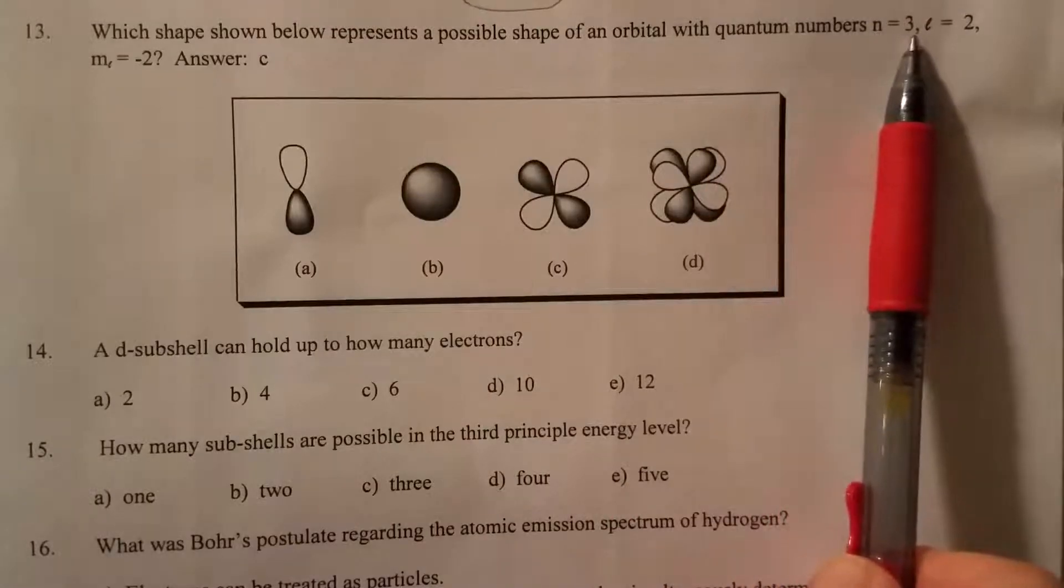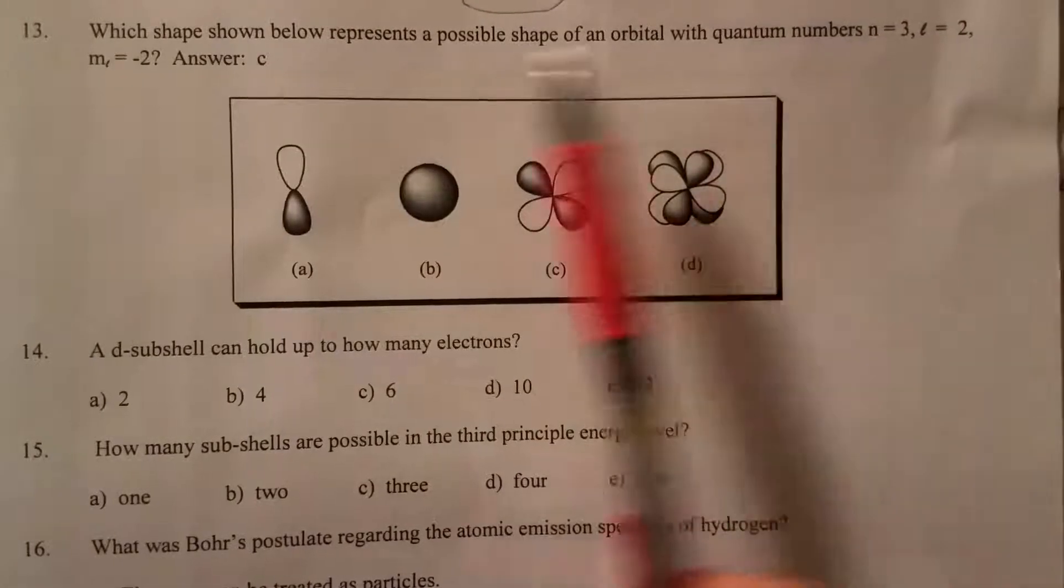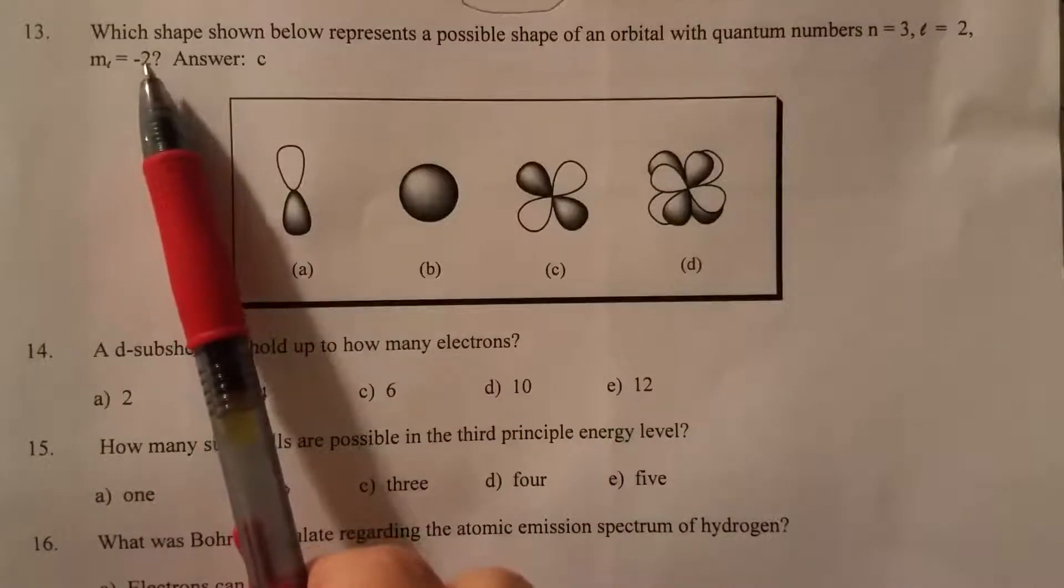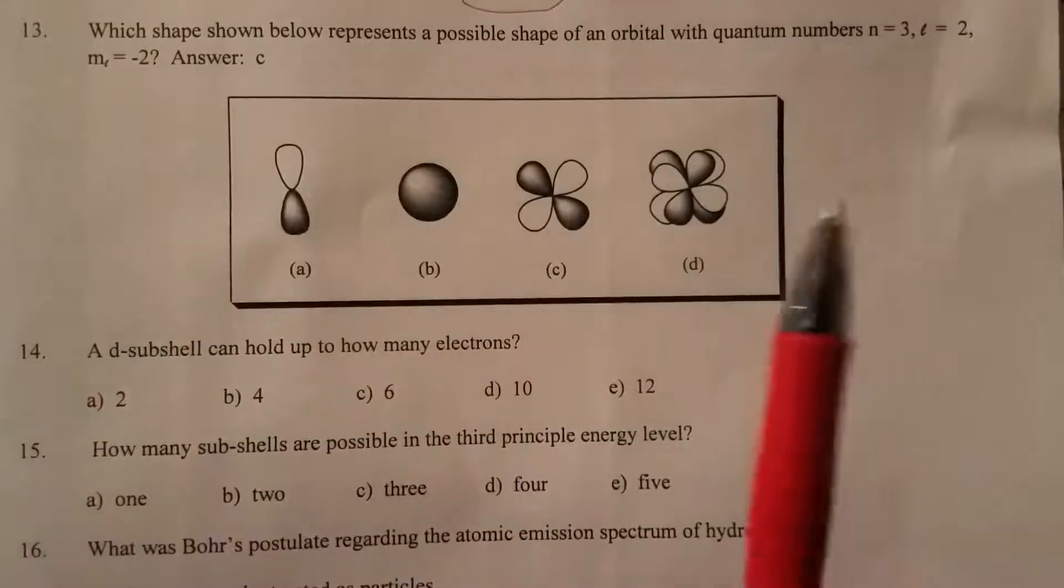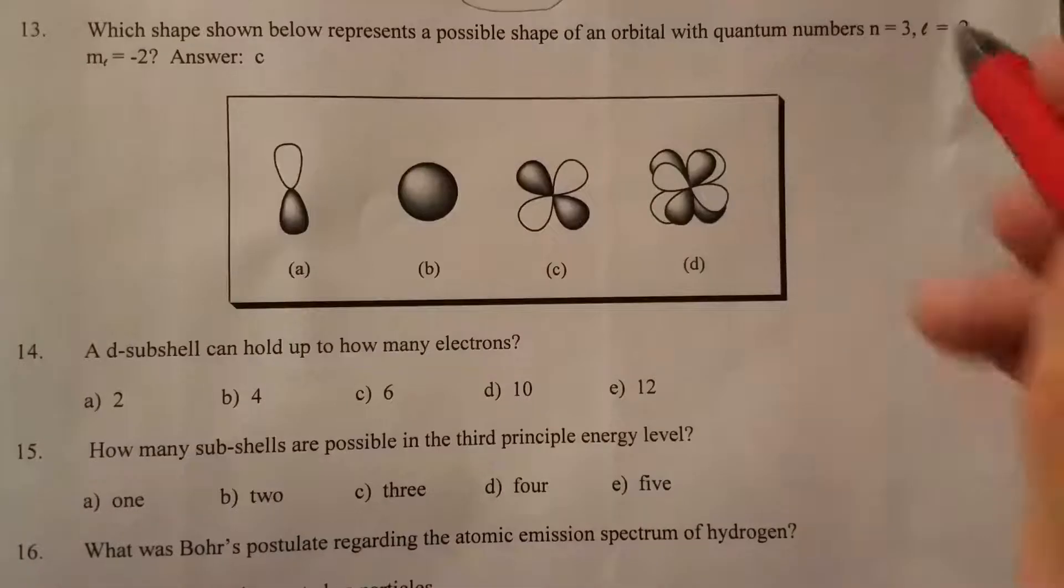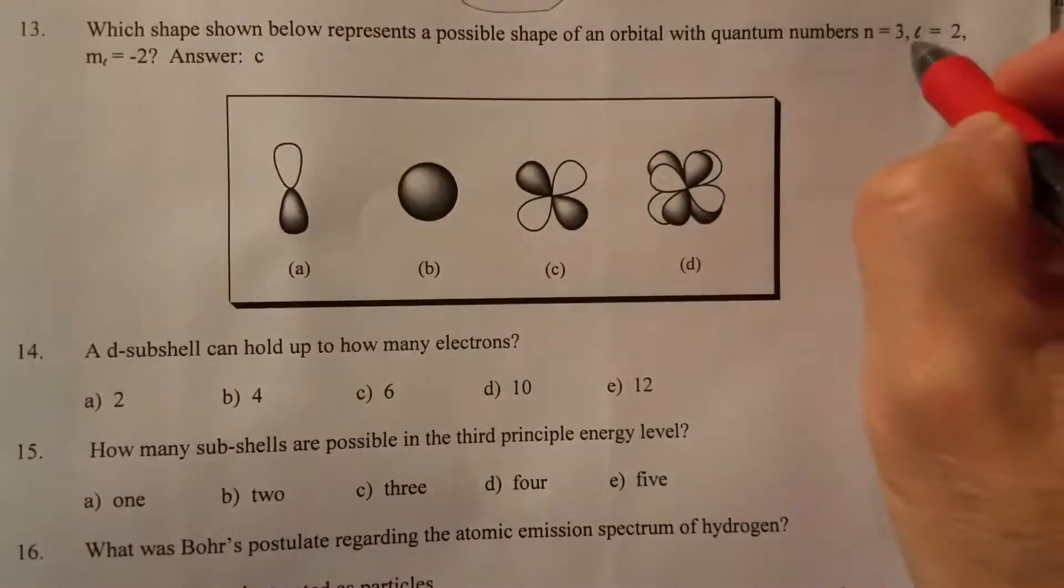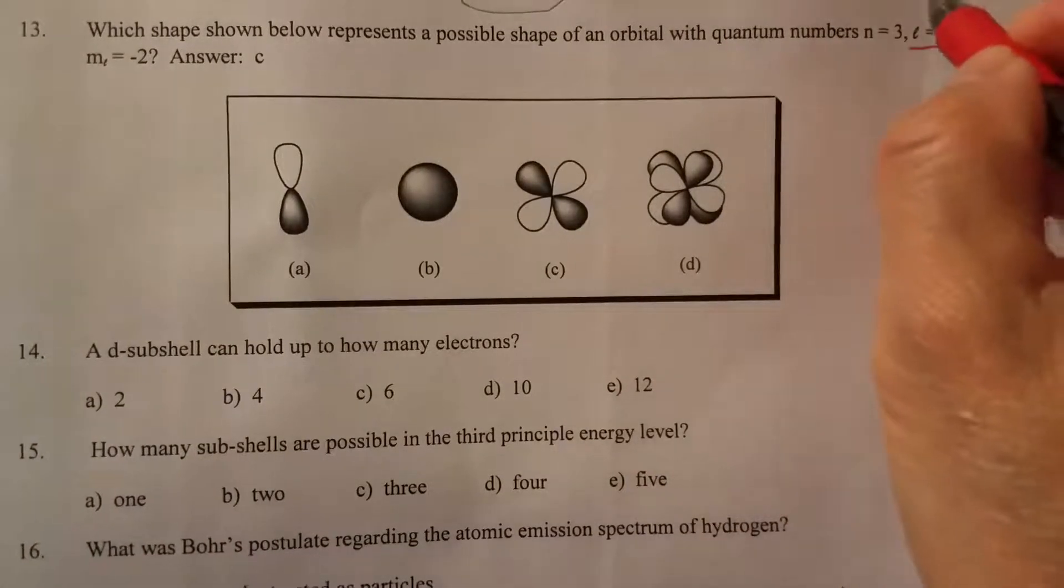n equals 3, l equals 2, m_l equals minus 2. Okay, so the key information right here is l equals 2.